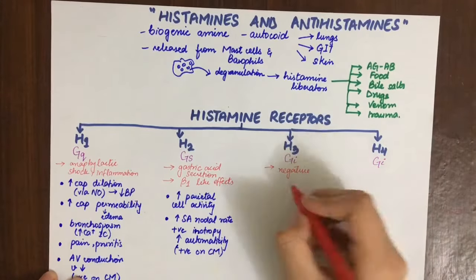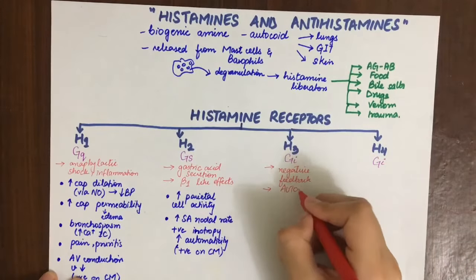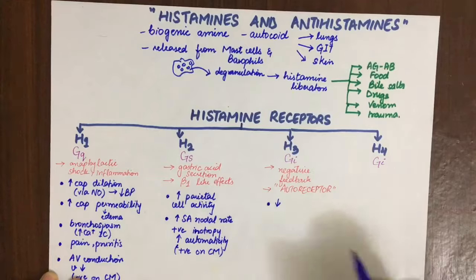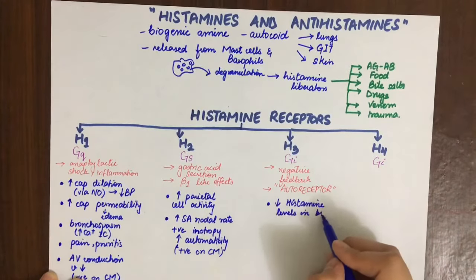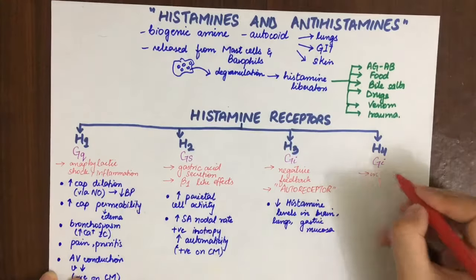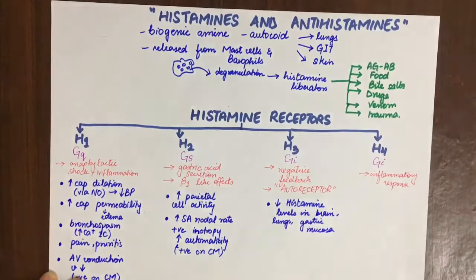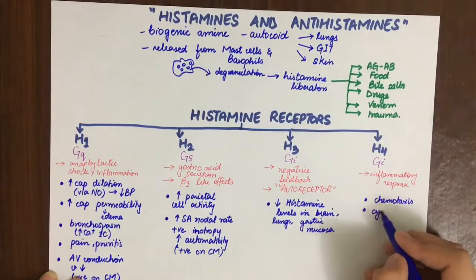The H3 receptor is primarily an autoreceptor, similar to the alpha-2 autoreceptor. It is mainly involved in negative feedback, thereby decreasing histamine levels in the brain, lungs, and gastric mucosa. H4 is mainly involved in the inflammatory response — specifically chemotaxis and cytokine secretion.